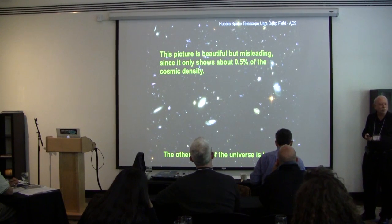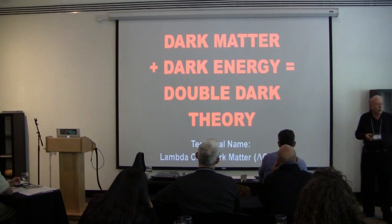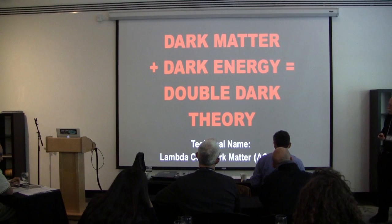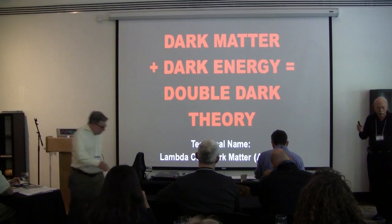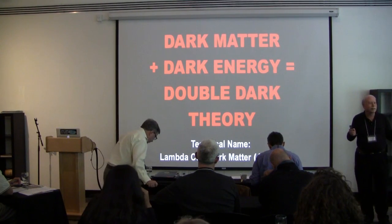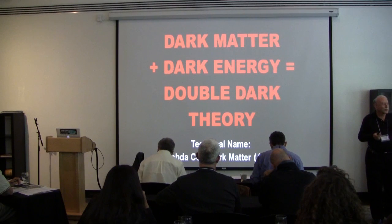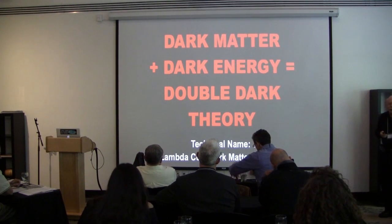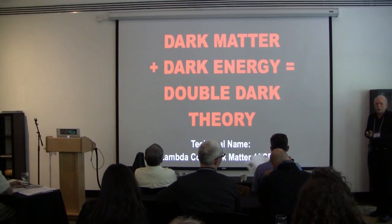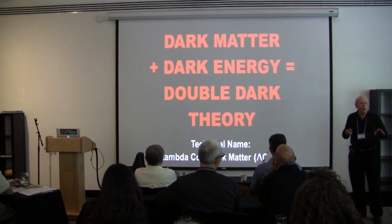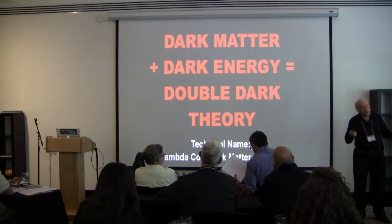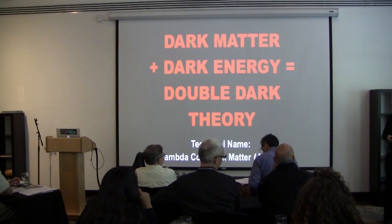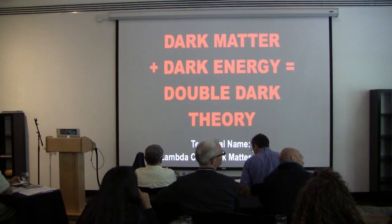It's only showing about half of 1% of the cosmic density. Ninety-nine and a half percent of the universe is invisible. The universe, as you've been told many times, is mostly made of dark matter and dark energy. In the popular books that my wife and I have written, we decided we need a friendly name for this, and we propose the double dark theory. Dark matter, dark energy. If you Google 'double dark,' the first 10 pages or so is all fun stuff, like chocolate and coffee.